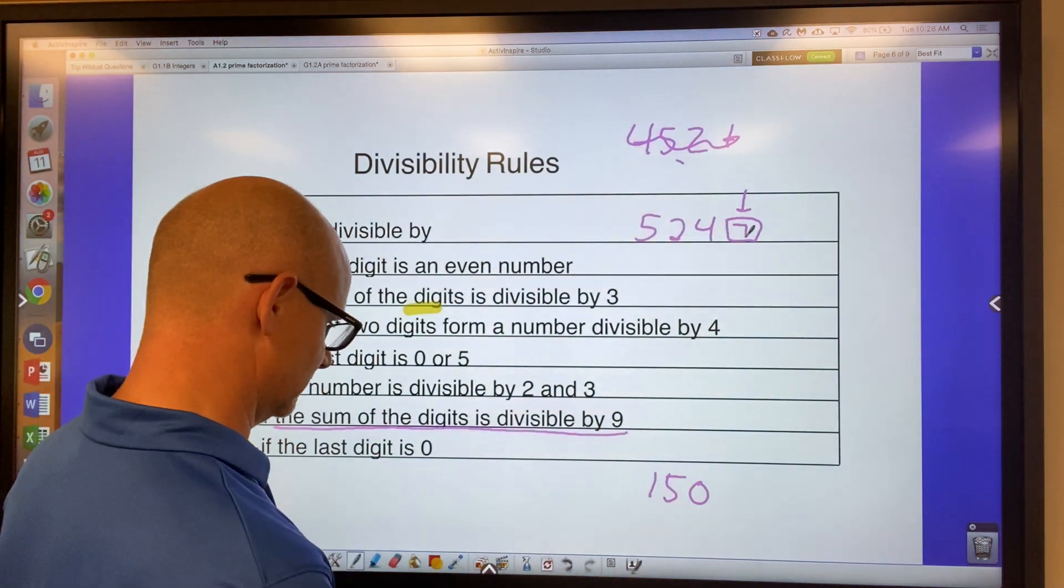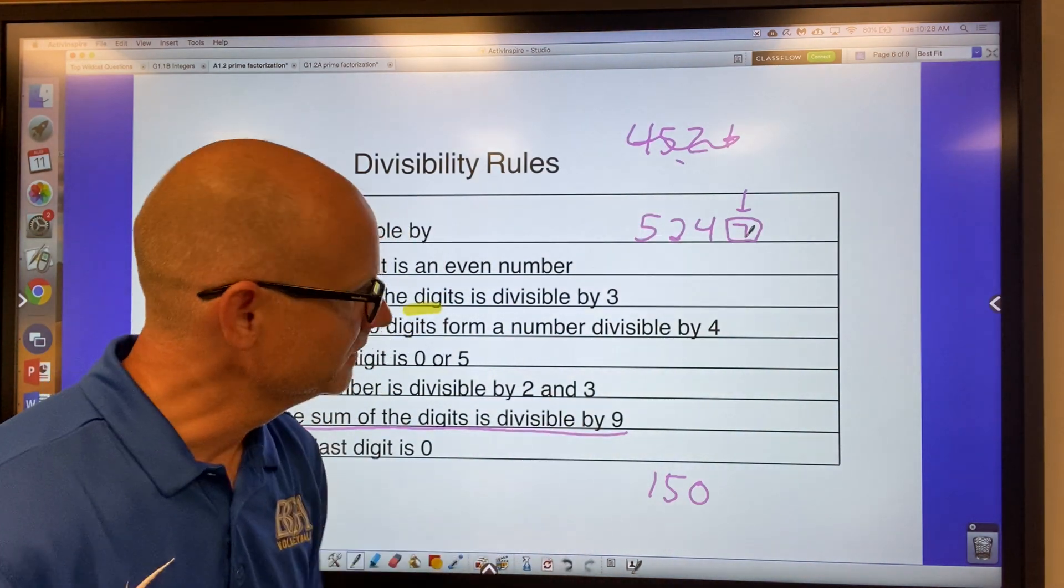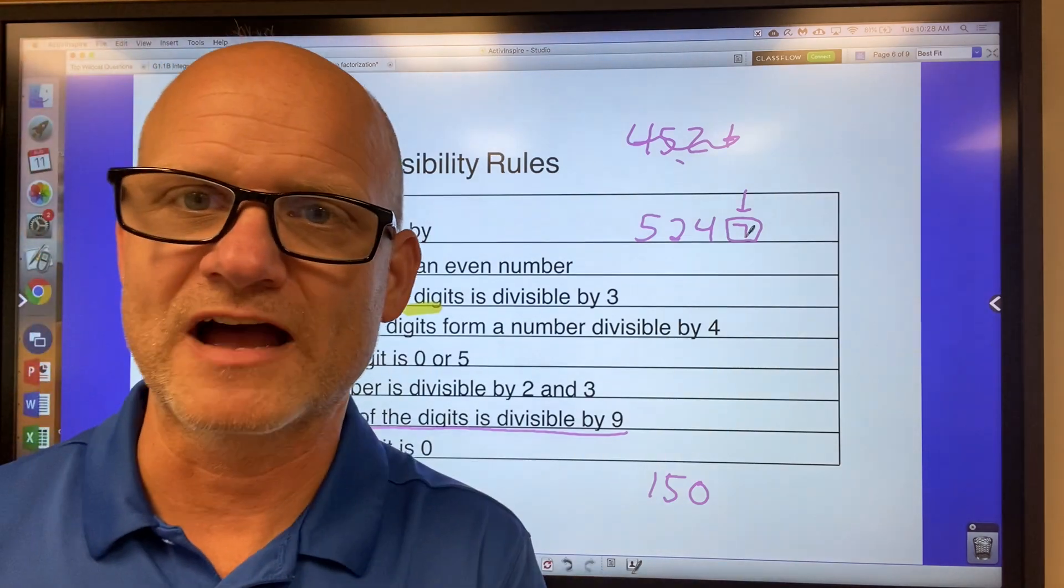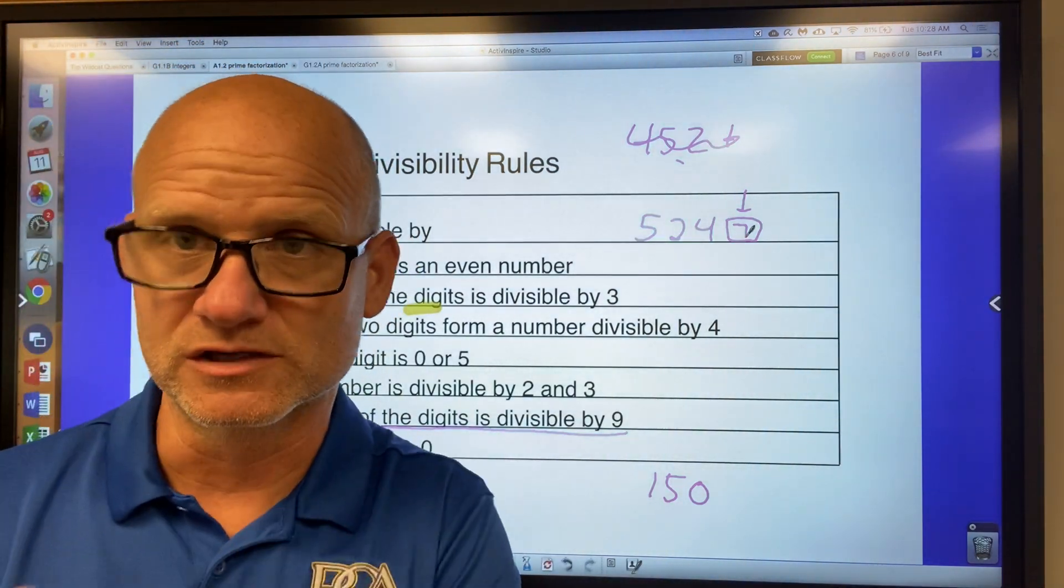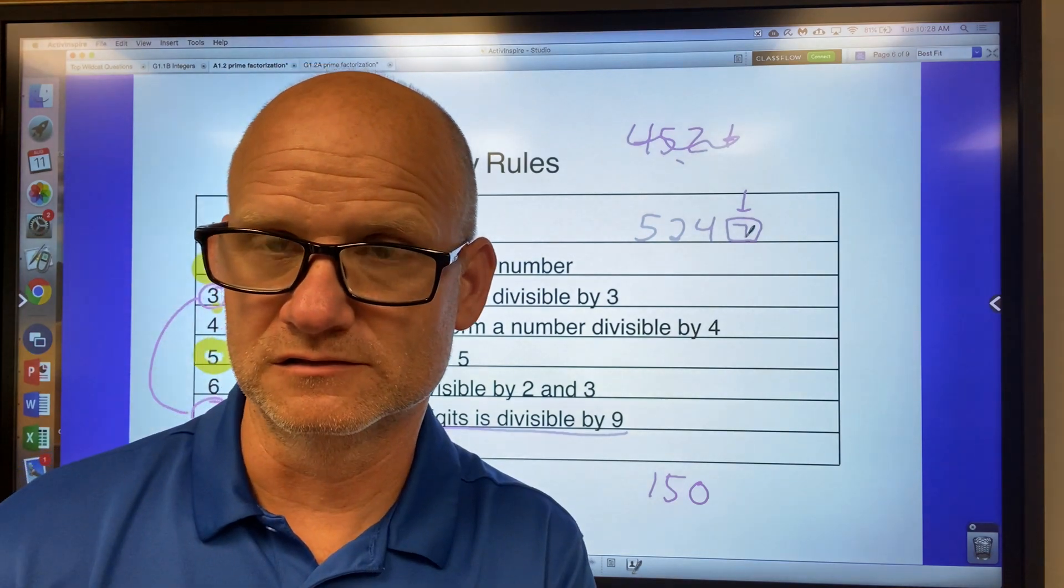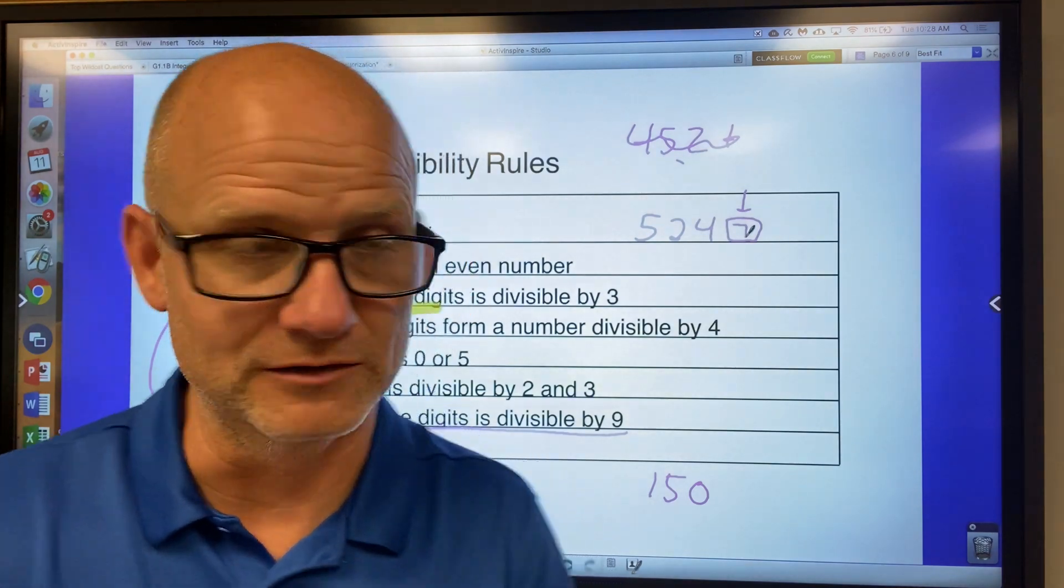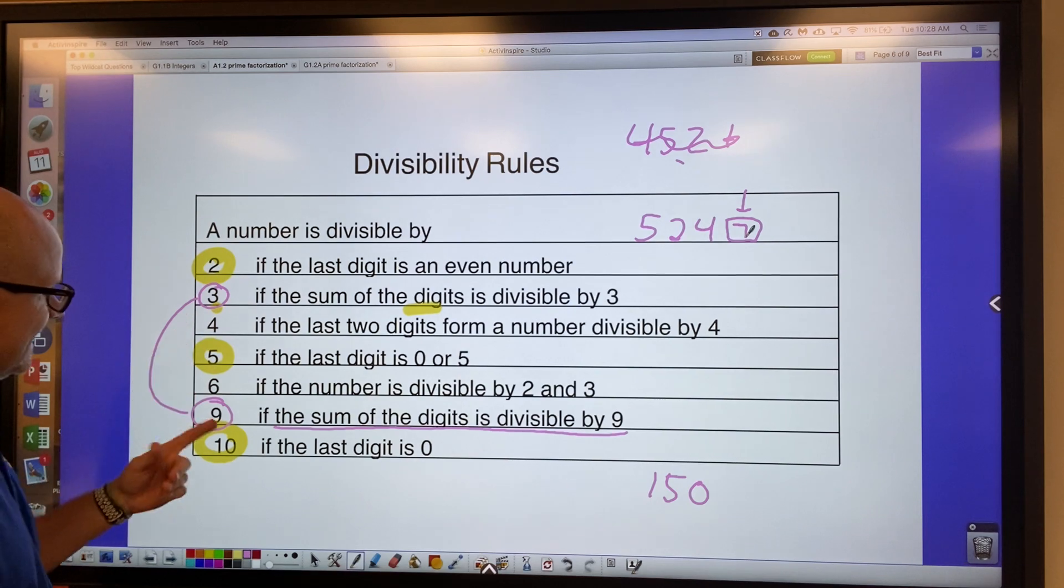And if I take a calculator and I take 5247 and I divide it by 9, it would come out divisible by 9. There would be no remainder. So 3 and 9. Okay?